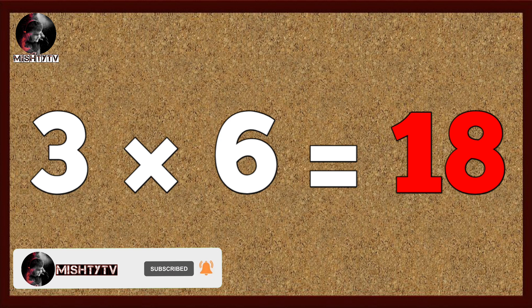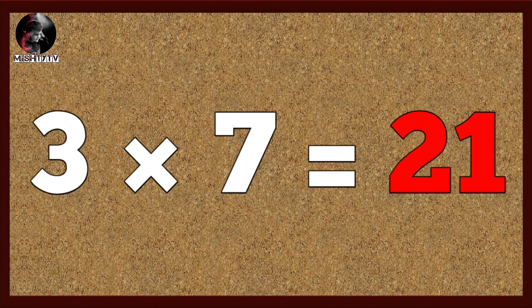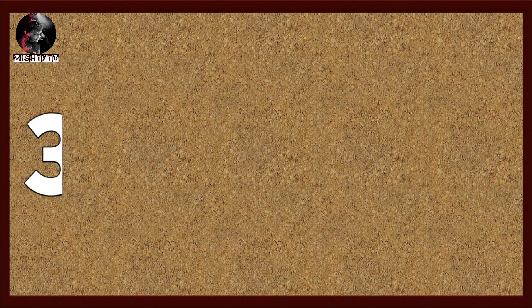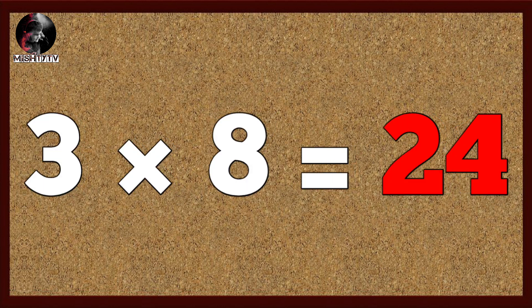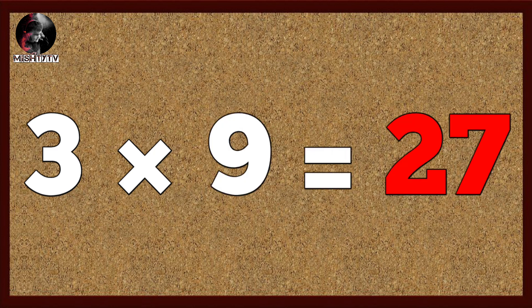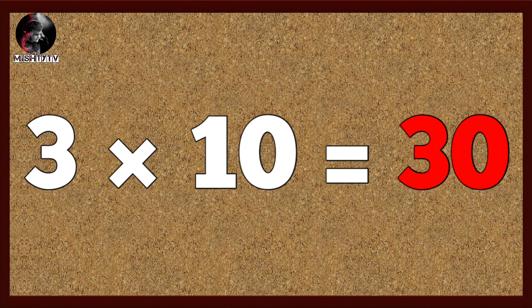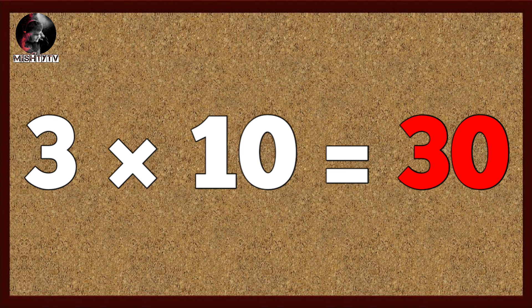Three seven's are twenty-one, three eight's are twenty-four, three nine's are twenty-seven, three ten's are thirty.